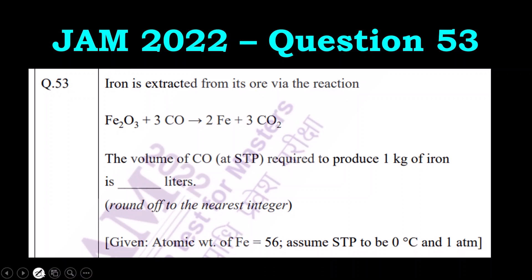Iron 3 oxide, Fe2O3, reacts with carbon monoxide to give Fe and CO2. The volume of CO at STP required to produce 1 kg of iron is dash liters. What we have to find out is the volume of CO, and round off to nearest integer, which means there should be no decimals.